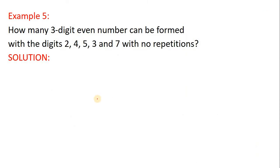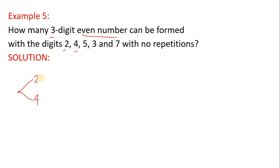Finally, example number 5. How many 3-digit even numbers can be formed with the digits 2, 4, 5, 3, and 7 with no repetitions allowed? For it to be an even number, the last digit must always be 2 or 4. Using a tree diagram: starting by branching to 2 and 4. If the last digit is 2, the first digit could branch to 5, 3, or 7 — giving 3 branches — and the last digit is fixed as 4. Wait, let me re-organize: branching out the last digit to 2 and 4 gives the structure for the combinations.